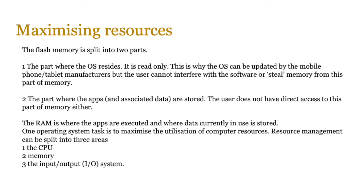RAM is where apps are executed and where data currently in use is stored. We now have three areas to manage: the CPU, the RAM, and the flash memory. These resources need to be managed, otherwise applications and users can get very greedy — wanting to use the entire RAM for one application or accessing the CPU all the time, which can lead to crashes. One of the most important tasks of an operating system is to maximize resource utilization, and this can be split into three areas: CPU, memory, and the input/output system.